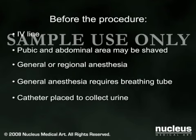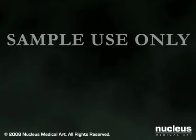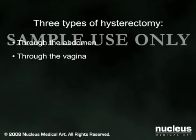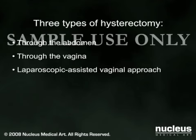A hysterectomy takes about one to three hours. There are three main ways to perform this surgery: through the abdomen, through the vagina, or using a laparoscope to assist a vaginal approach.